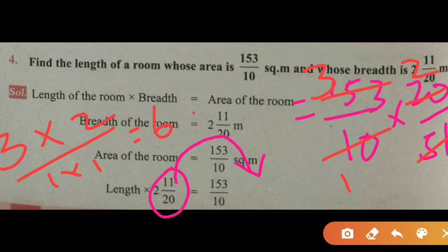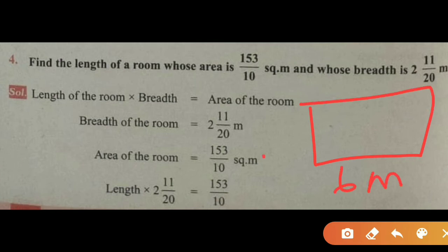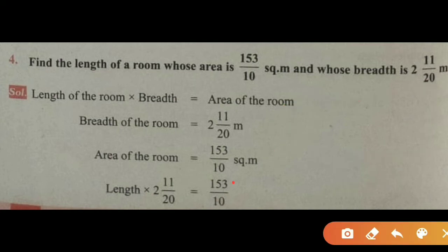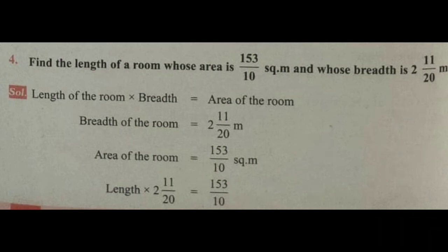The length is 6 meters. So the length of the rectangular room is 6 meters, with the breadth being 2 and 11 by 20 meters. The answer is: length of the room is 6 meters.